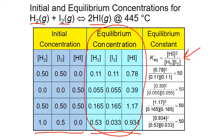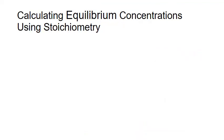Now this is the ideal scenario where we're able to measure all the reactant and product concentrations directly. Oftentimes though it's only possible to measure the concentration of just one reactant or one product at equilibrium. In those cases we can calculate the equilibrium concentrations of the other reactants or products using stoichiometry. Let's discuss how you can do this.